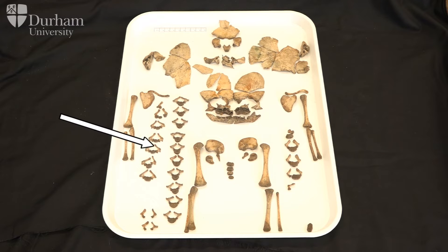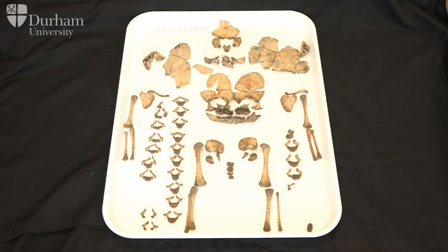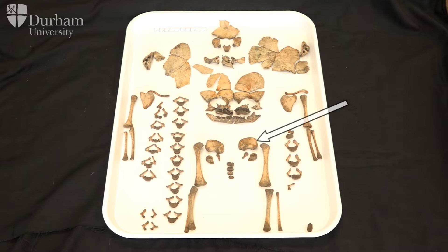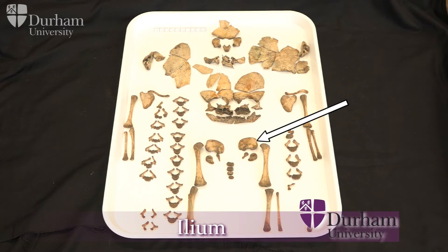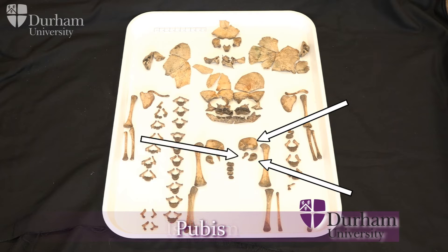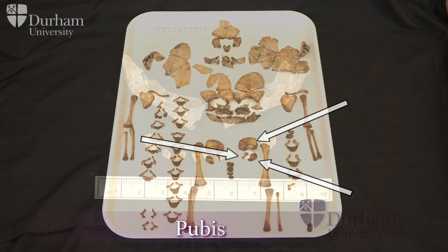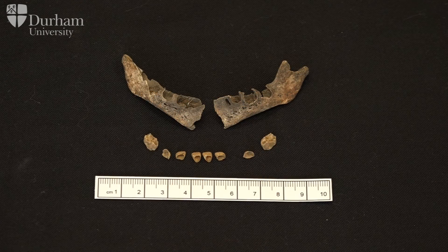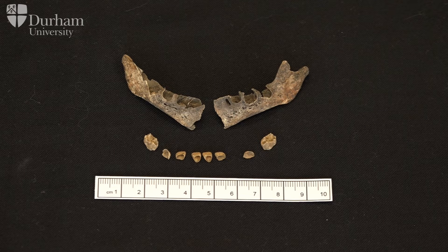Here we have the vertebrae, and you can see that they're actually in three separate pieces rather than one. From about one to three years of age the arches of the vertebrae will fuse together, and these will then fuse to the vertebral body between about five to seven years of age. Here we have the left side of the pelvis — the ilium, the ischium, and the pubis — and as you can see they're in three separate pieces at birth.